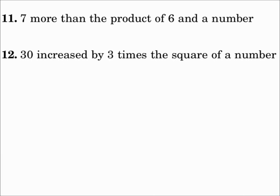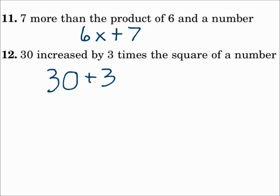Number 11: seven more than the product of six and a number. Seven more than means you're adding seven. What are you adding seven to? The product of six and a number — so that will be 6x plus 7. Number 12: 30 increased by three times the square of a number. 30 increased by is 30 plus. What's adding to it? Three times the square of a number — three times a number squared, using the variable c: 30 plus 3c squared.